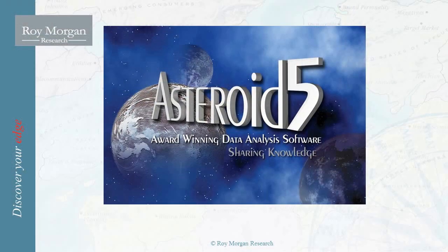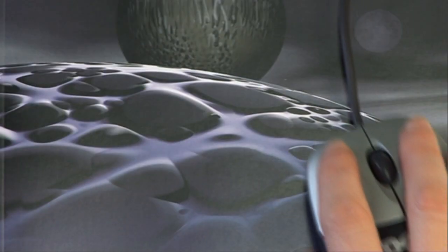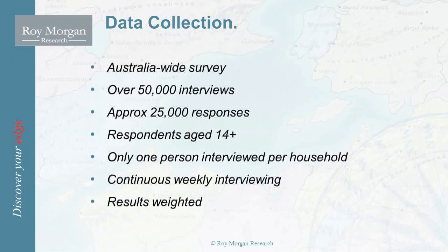In this introduction to Asteroid, I'd like to tell you a little bit about how the data is collected and explain what Asteroid is. First of all, data collection. We have an Australia-wide survey, city and country areas. There are over 50,000 face-to-face interviews annually. Most finance data is collected using face-to-face methodology.